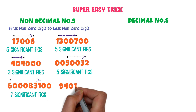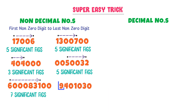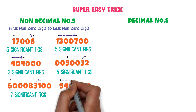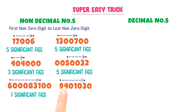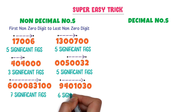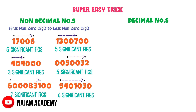Finally, consider a number where the first non-zero digit is 9 and the last non-zero digit is 3. Go from 9 to 3 — counting 1, 2, 3, 4, 5, 6 — so there are six significant figures present in this number. By this way, we can easily find significant figures in any non-decimal number.